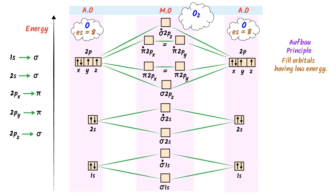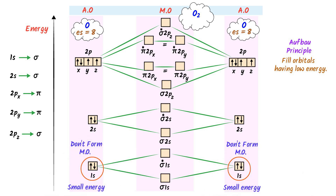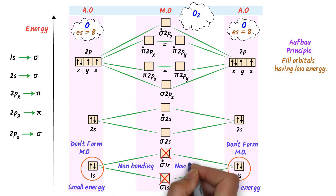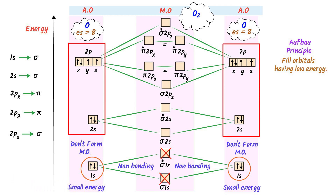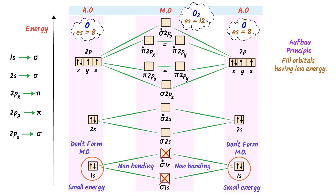Now we will place electrons in the molecular orbitals of oxygen molecule. Remember this very important point: the 1s atomic orbitals do not form molecular orbitals because they have smaller energy and cannot overlap. Hence, we say that these atomic orbitals are non-bonding. The remaining 6 electrons of each atomic orbital combine together to form 12 electrons, and I will place these 12 electrons in molecular orbitals.